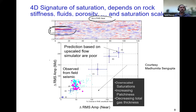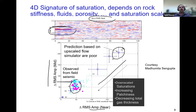On a plot of change in amplitude at near offset versus mid offset, if we do not account for saturation scales the model predicts values that are completely inconsistent with the field data. However, if we correctly understand the scales of saturation — downscaling saturation and increasing patchiness — we can get models consistent with the field data and make better predictions. Seismic signatures depend on rock and fluid properties, saturation, and the scales of saturation.